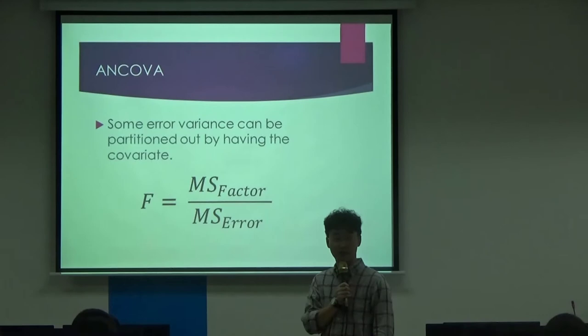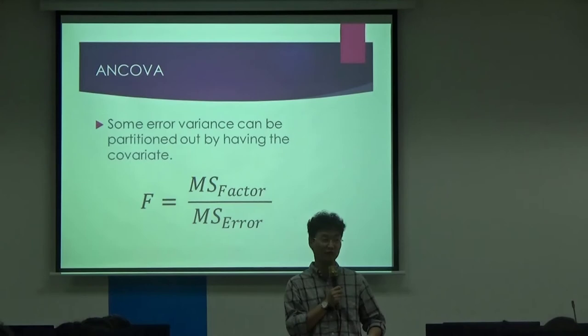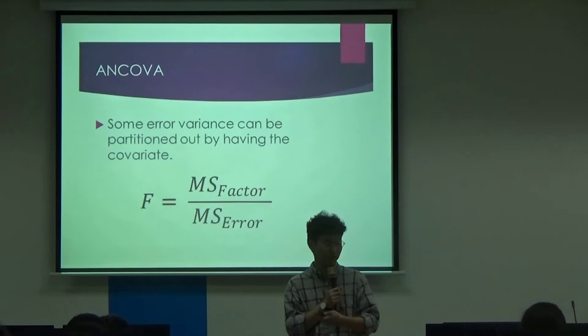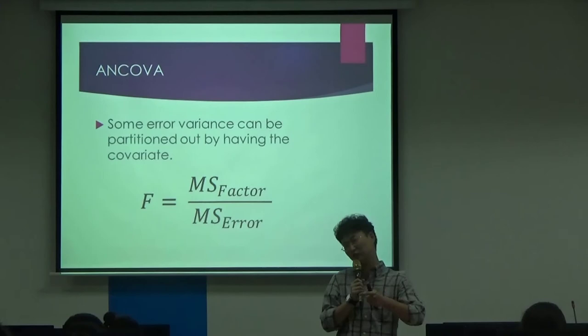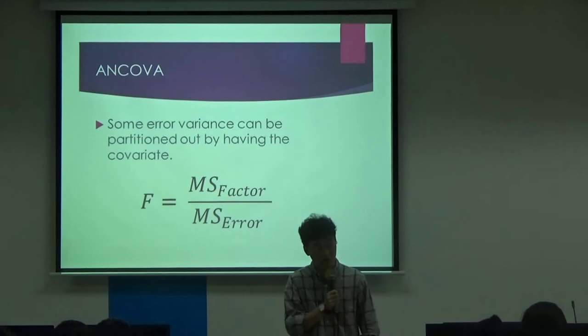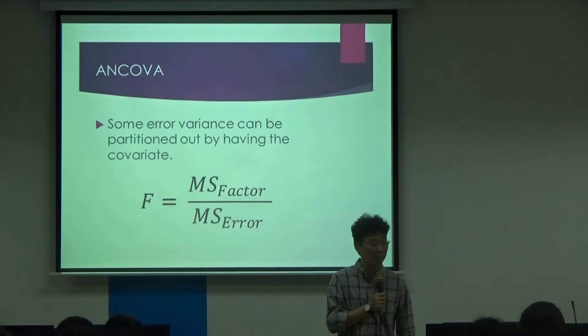The advantage of having a covariate is that when you introduce it, you are partialing out variance from the error - from the denominator. Ideally, if you have a covariate or zero covariates, the error term from the F equation - from the denominator - will be smaller. If the denominator is smaller, you'll have larger F values, meaning more chances to see significant results. That's the advantage of having a covariate - you partition variance from the error term by introducing the covariate.